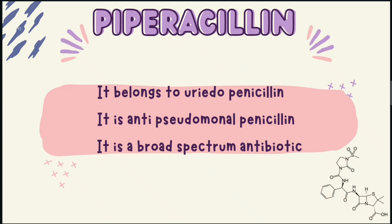There are three ureidopenicillins: azlocillin, piperacillin, and mezlocillin. The best thing about ureido groups is they are active against Pseudomonas aeruginosa. Pseudomonas aeruginosa is a very infective bacteria, and piperacillin is active against it as it contains ureido groups in it.